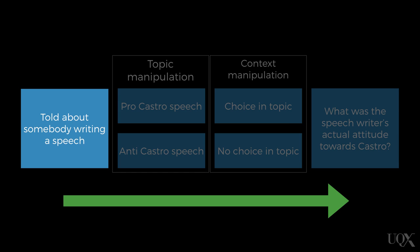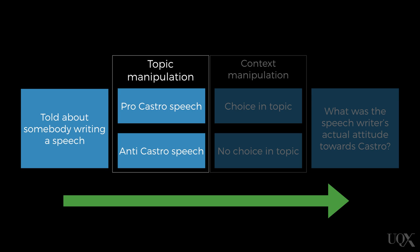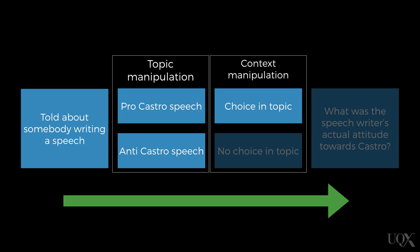Jones and Harris told their participants that the students had written speeches either in support of or against Castro. Further, participants had been told that the student speechwriters had either been given a free choice about which topic they wrote about — pro or anti Castro — or participants were told that the speechwriters had been assigned a topic, either pro or anti Castro, to write about.